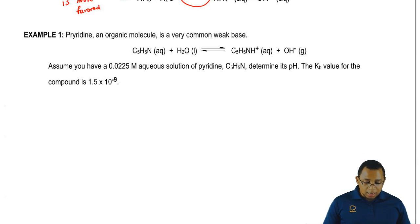We have a weak base here. It says assume you have a 0.0225 molar solution of pyridine, determine its pH. The Kb value for the compound is 1.5 times 10 to the negative 9. We're going to need a lot of room to work this first ice chart out, so I'm going to remove myself from the image so we have more room to work with.